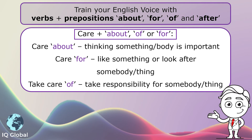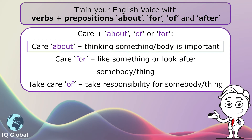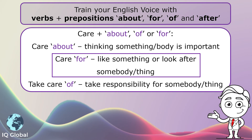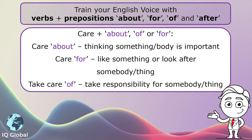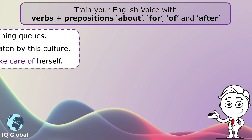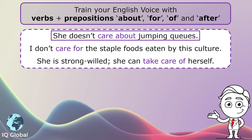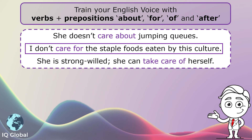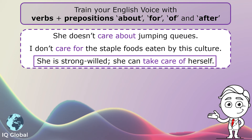Care plus about, of, or for. Care about: thinking something or somebody is important. Care for: like something or look after somebody or something. Take care of: take responsibility for somebody or something. Example sentences: She doesn't care about jumping queues. I don't care for the staple foods eaten by this culture. She is strong-willed; she can take care of herself.